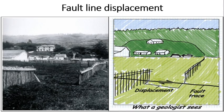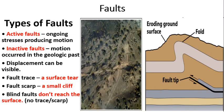Next, fault line displacement. The left-hand side image shows two adjoining fences, but in the right-hand side image they are broken or torn apart by the forces of the earthquake. You can see the displacement direction, fault trace, and fault.